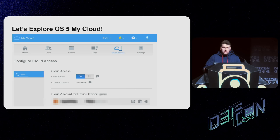We improved our GUID collection using certificate harvesting. Similar to passive DNS servers, many servers let users query certificates they've encountered and search for patterns in certificate names. We used Censys, which boasts over six billion certificates in their database. When we searched for the Western Digital pattern, we found over 1.5 million devices just in the last three months, giving us the GUID of every one of those devices — accessible through Western Digital's cloud platform.